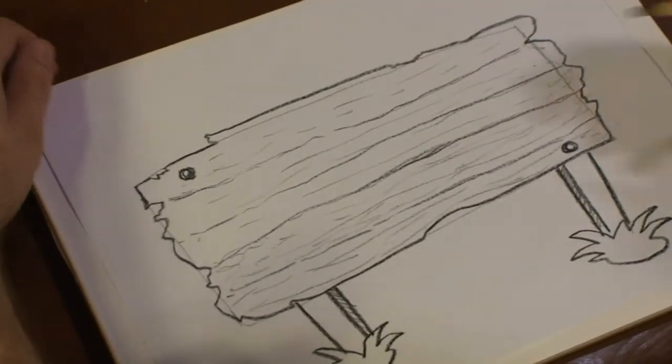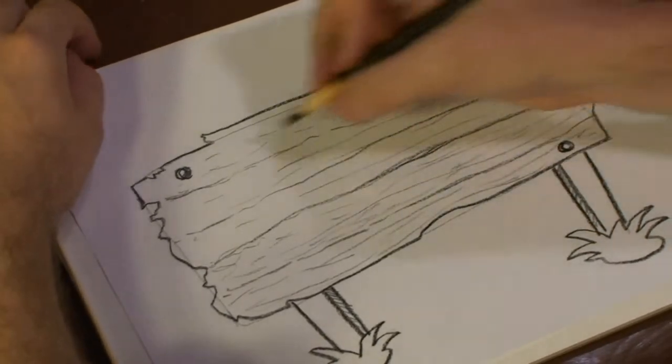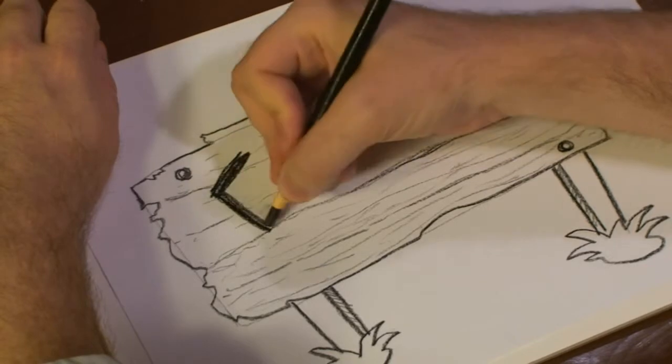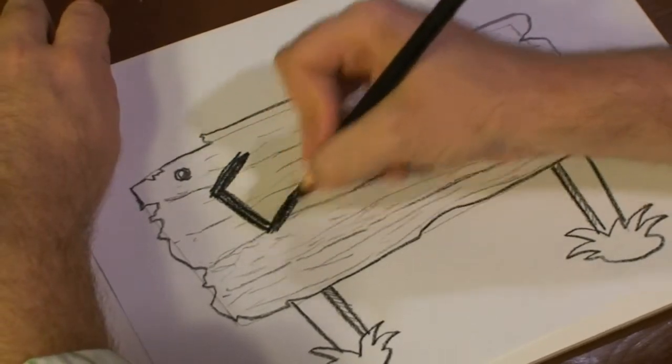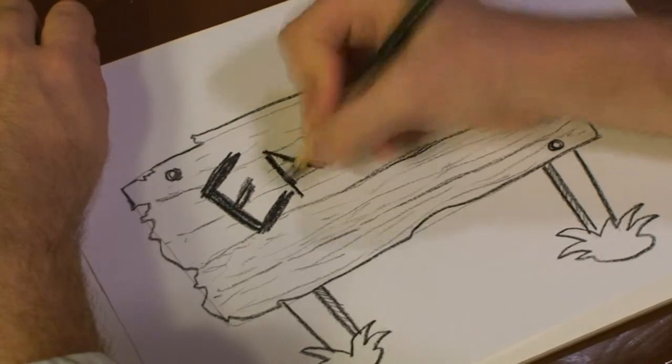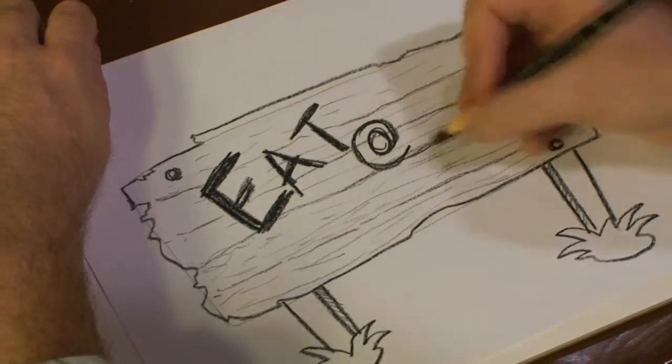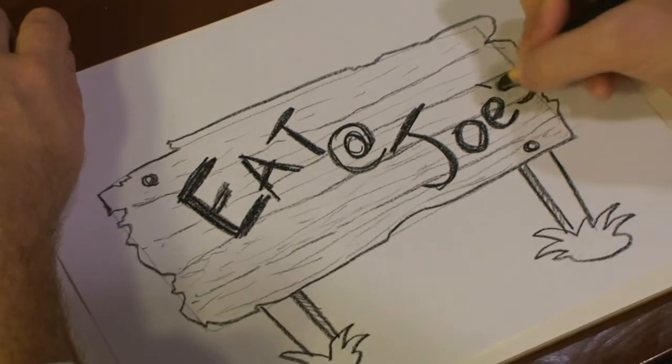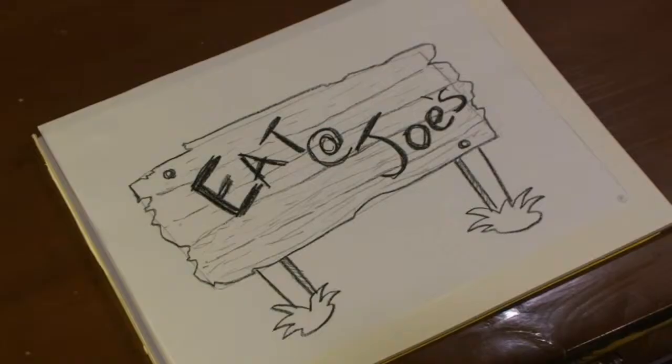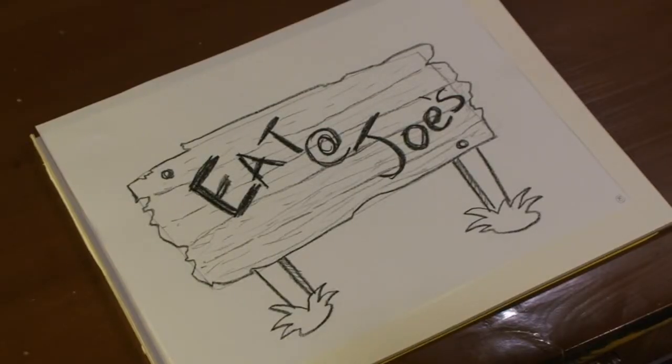Now that we've got that set up, you can write whatever you want in here. So I'm going to do a quick little Eta Joe's. There you go. And that's how you draw some wooden weathered signs. Hope you enjoyed. See you next time.